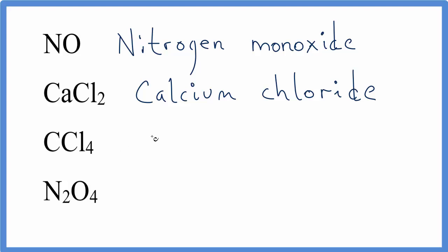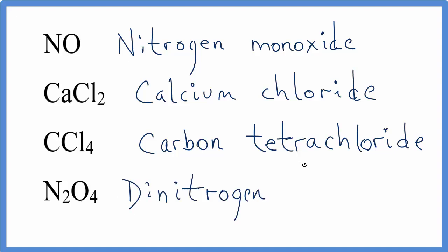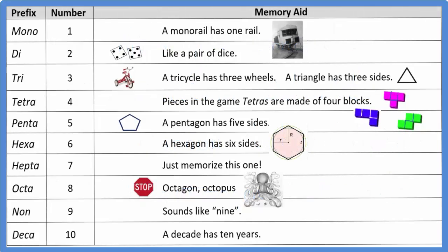For CCl4, we have carbon tetrachloride. And for N2O4, that'll be dinitrogen tetroxide. Remember, we don't have double vowels. And that's it for writing the names for molecular compounds.